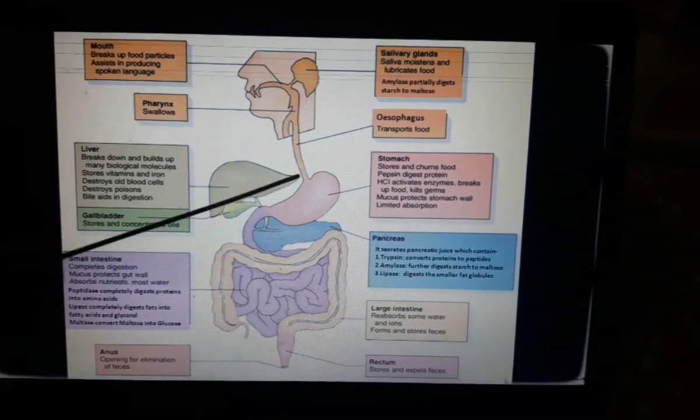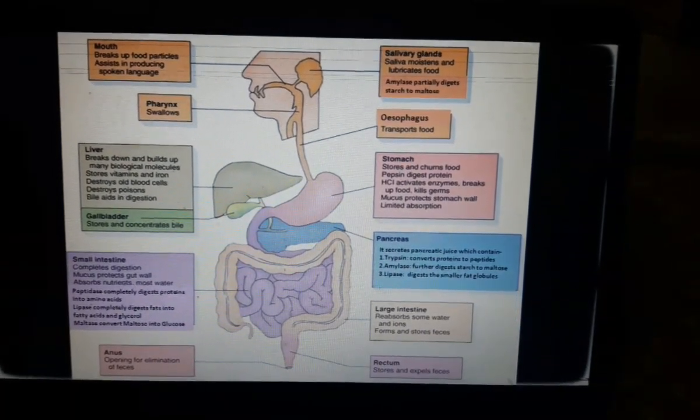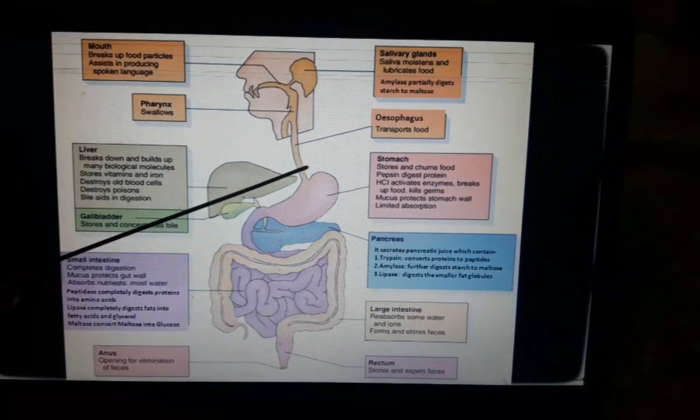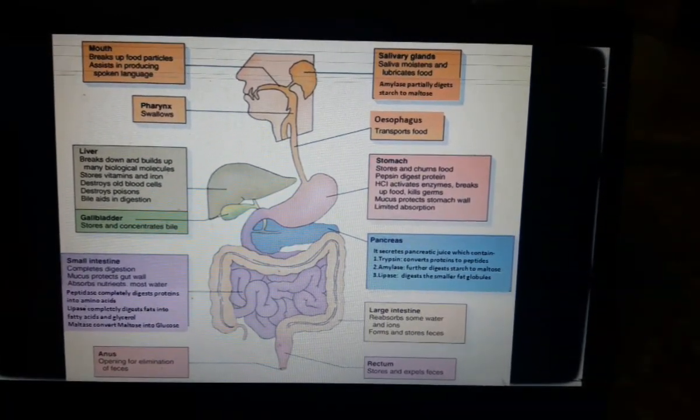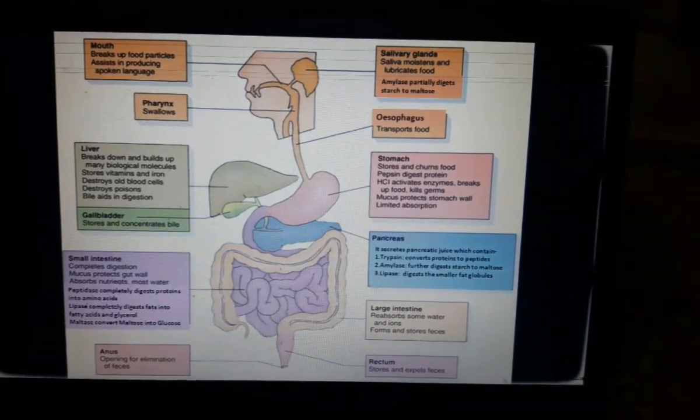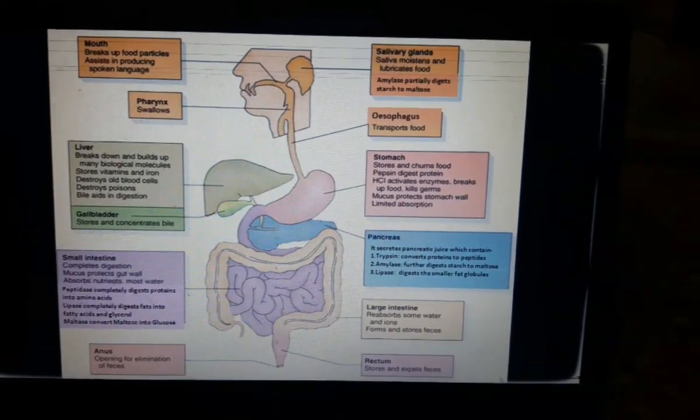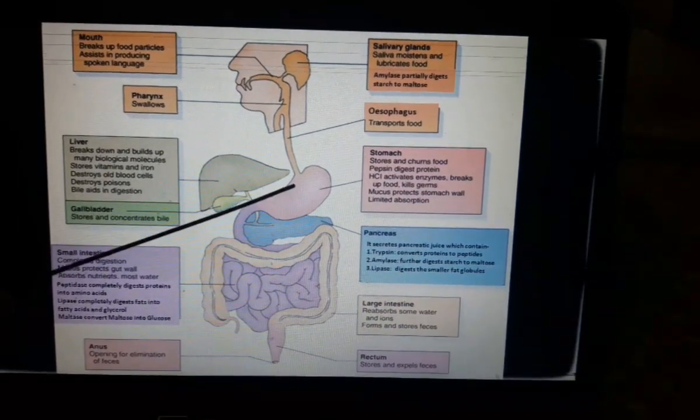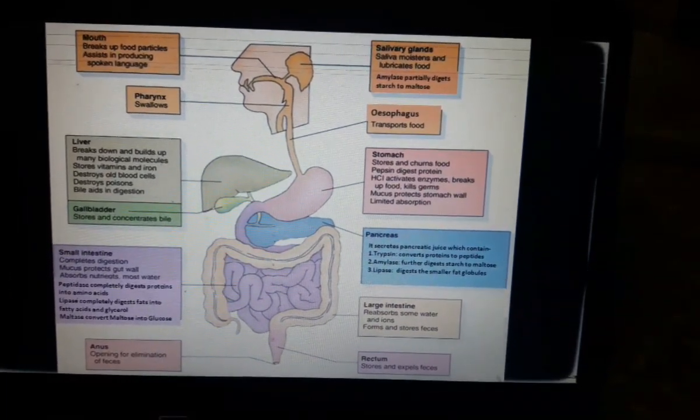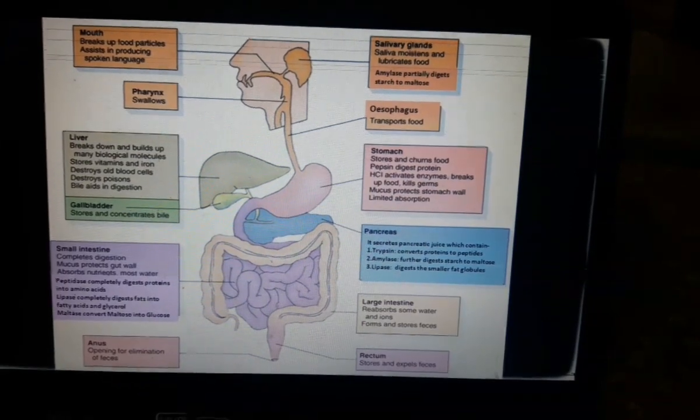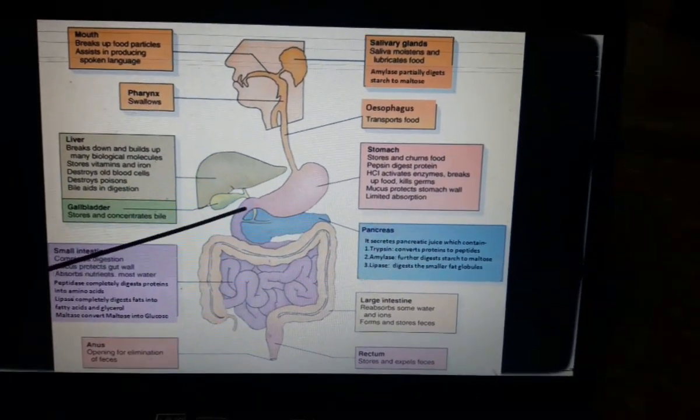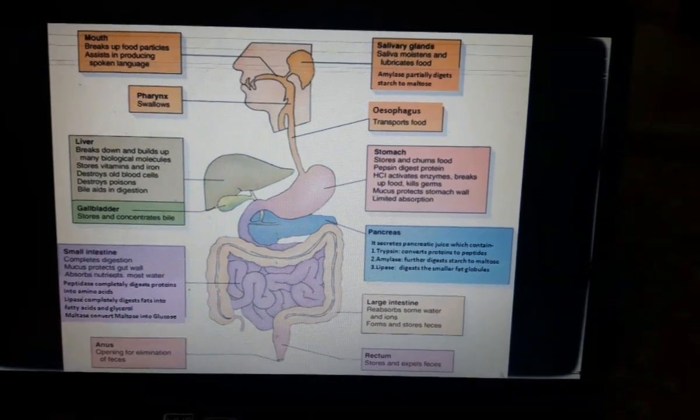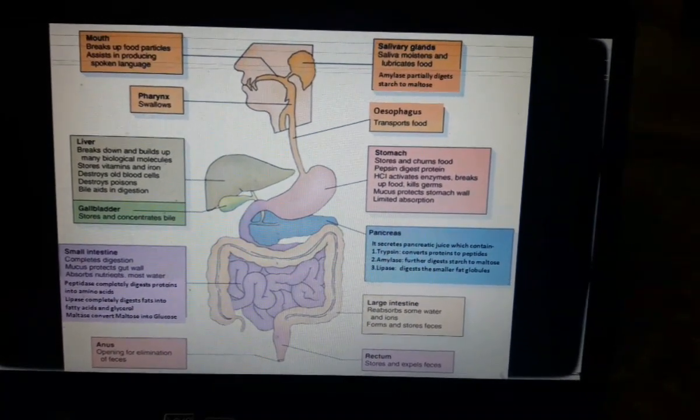What is stomach? It is a large J-shaped muscular bag-like structure located below the diaphragm. Food is passed from the esophagus into the stomach. At the junction between the stomach and esophagus, and the stomach and small intestine, there are sphincters present which control the movement of food.